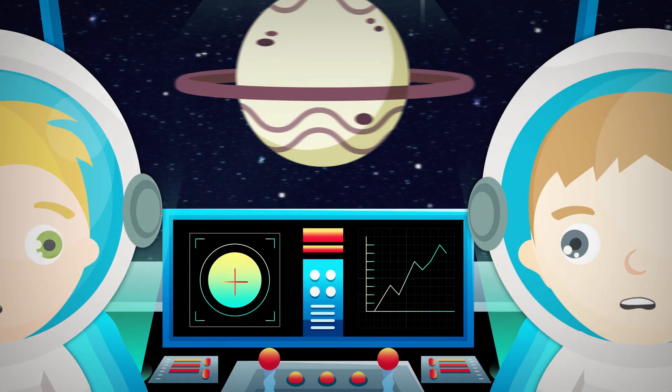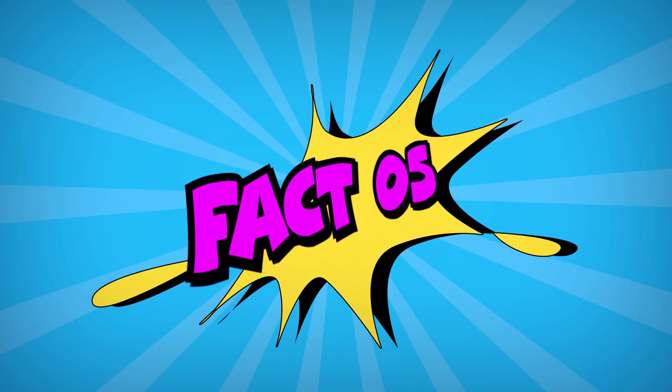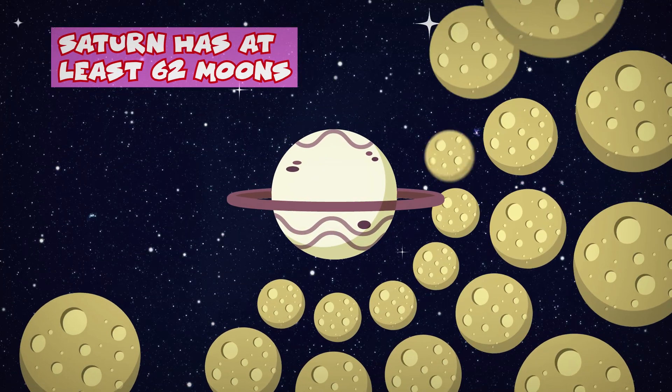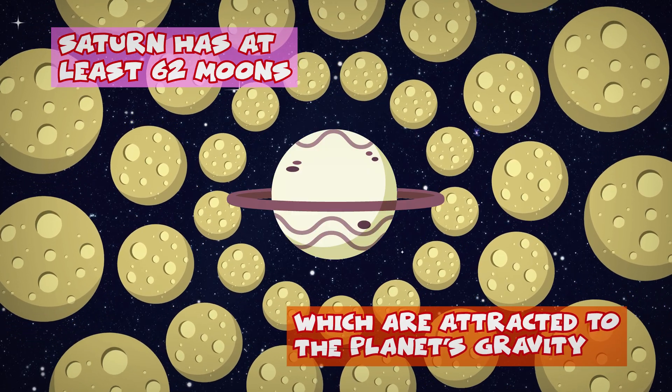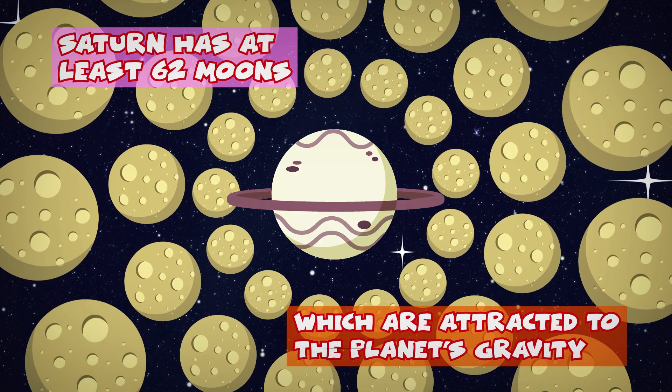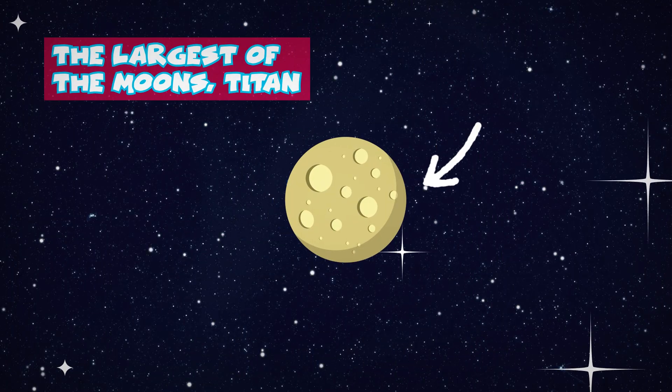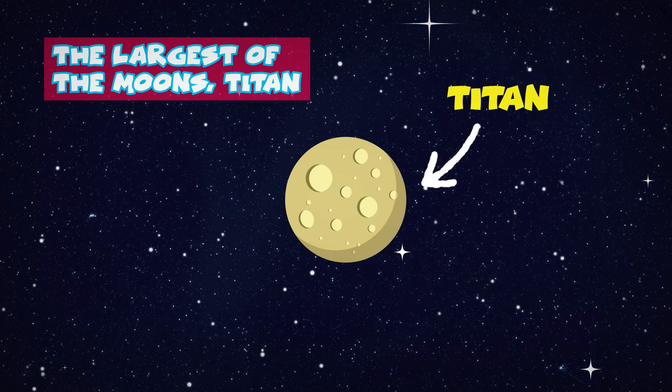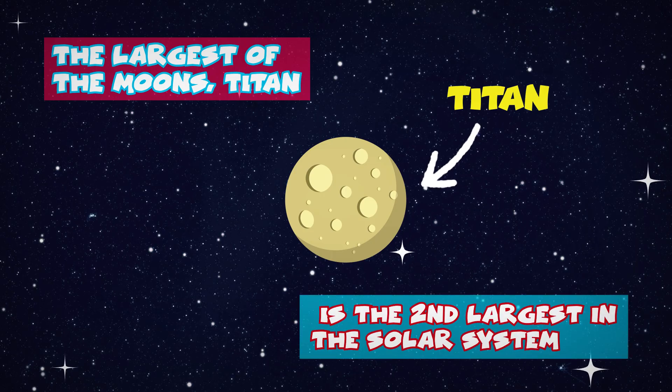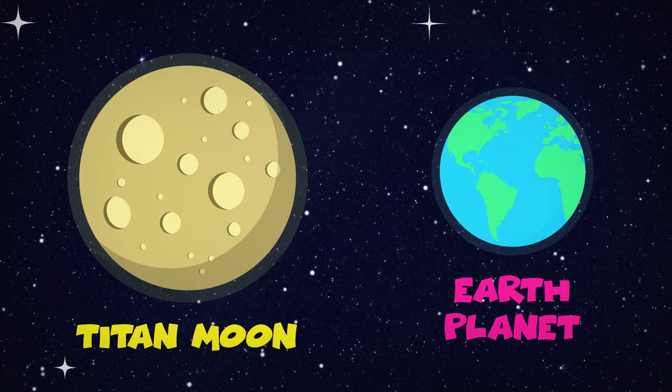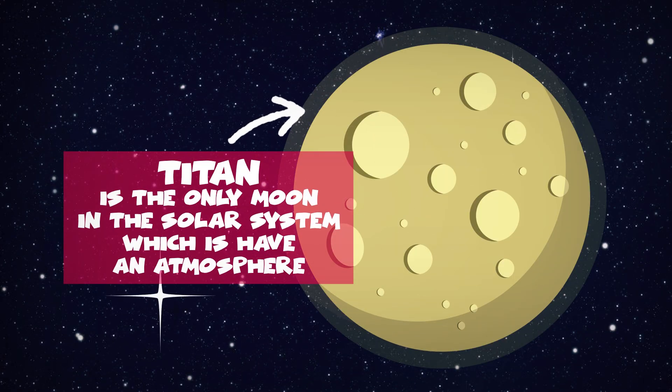Wow, that is amazing! Wait until you hear fact 5. Saturn has at least 62 moons. These are satellites which orbit around the planet attracted to it by the planet's gravity. The largest of moons, Titan, is the second largest in the solar system. Titan is larger than the Earth and is the only moon in the solar system which is known to have an atmosphere.